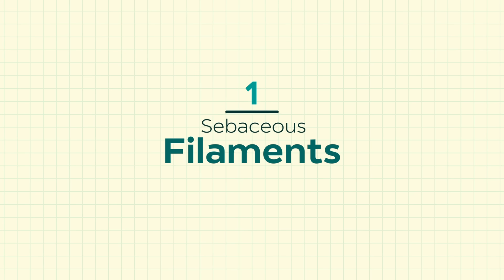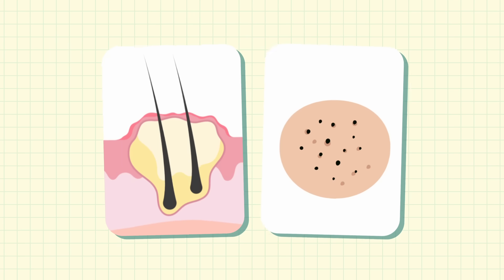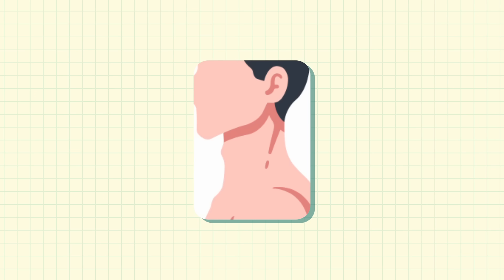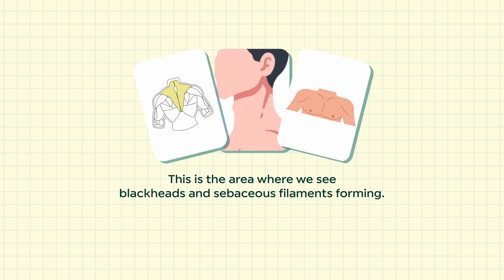The first thing we're going to dive into are sebaceous filaments. Sebaceous filaments are essentially a normal part of your skin. Both blackheads and sebaceous filaments tend to appear in areas of the body that we call the sebaceous areas — where your oil glands are predominant, your sebaceous type oil glands, essentially kind of like a modified sweat gland. So these are going to be most prominent on the head and neck, the upper chest, and the upper back.